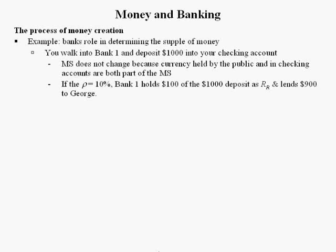Bank 1 can't lend out $100, but it can lend out the rest. $1,000 minus $100 is $900. Bank 1 could lend out all $900, and suppose it does this to a guy named George.